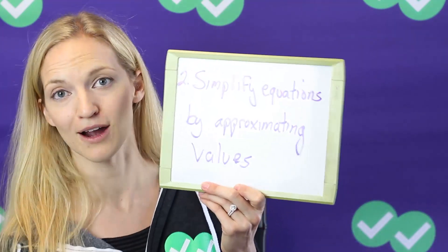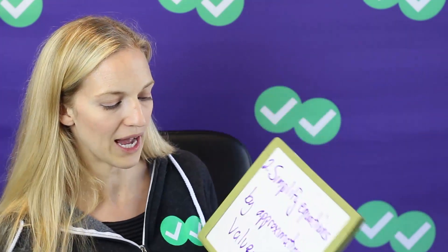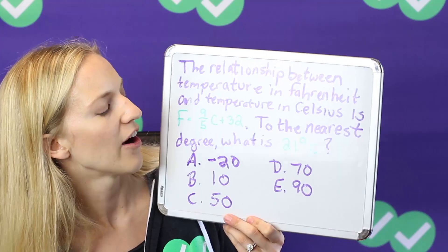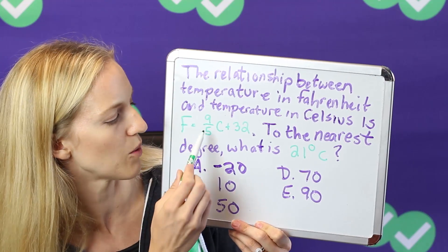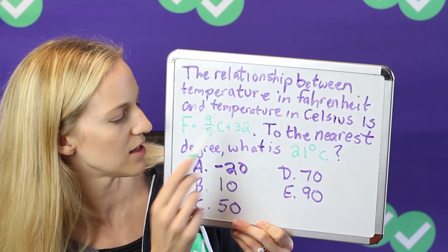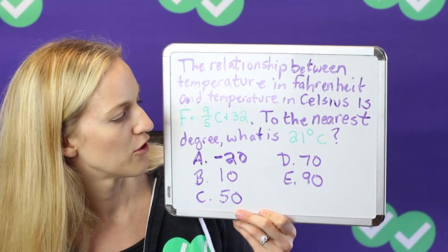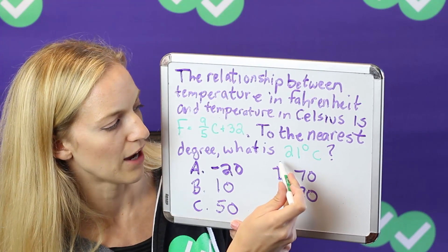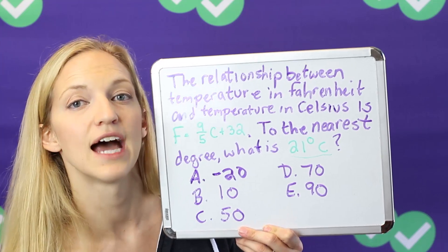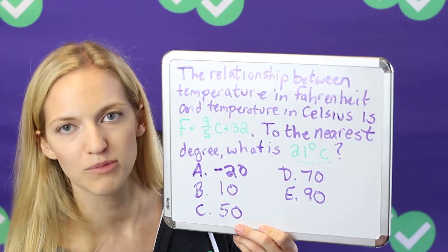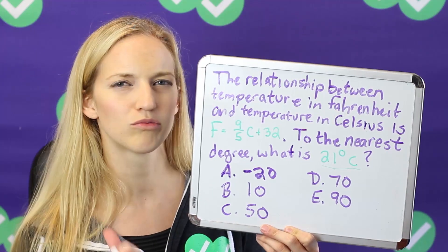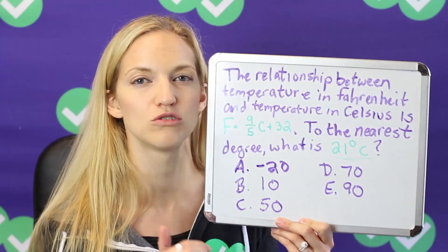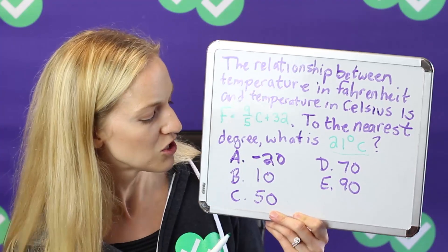Number two is simplifying equations by approximating values. Here is another sample ACT-like question. Let's say the question tells you that to convert between Fahrenheit and Celsius, the equation is: Fahrenheit equals 9/5 times the Celsius temperature plus 32, and it's asking you what is 21 degrees Celsius in Fahrenheit. You might just grab your calculator and plug in values, and that's okay. But if it's a more difficult problem, or if you're quick with numbers in your head, it might be faster to do some approximation. Look at the answer choices — they're pretty far apart: negative 20, 10, 50, 70, 90.